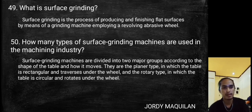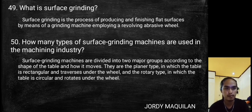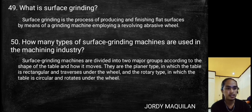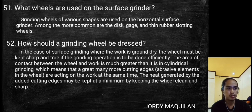Surface grinding is a process of producing and finishing flat surfaces by means of a grinding machine employing a revolving abrasive wheel. Surface grinding machines are divided into two major groups: the planar types, in which the table is rectangular and traverses under the wheel, and the rotary types, in which the table is circular and rotates under the wheel.